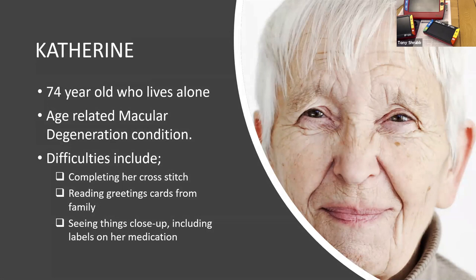Let's move on and meet a lady called Katherine. She's a 74-year-old who lives alone and has age-related macular degeneration. The things we've been asked to help Katherine with are completing her cross-stitch, reading greetings cards from her family, and seeing things close up including her medication. Macular degeneration affects the central vision — Katherine will not be able to pick up any detail. Generally, people will retain their peripheral vision, so it's not completely blind, but it's very much the detail that disappears.